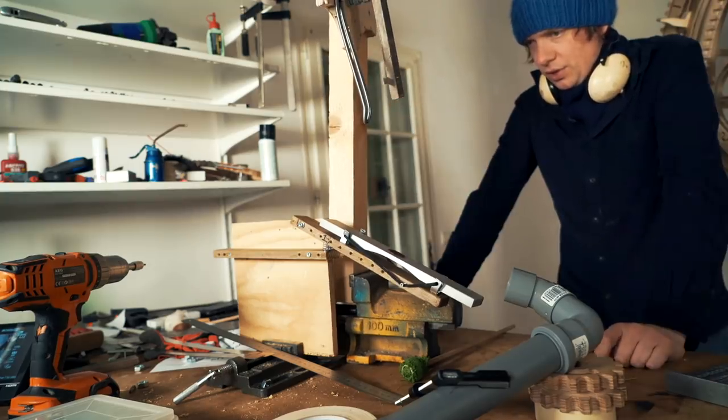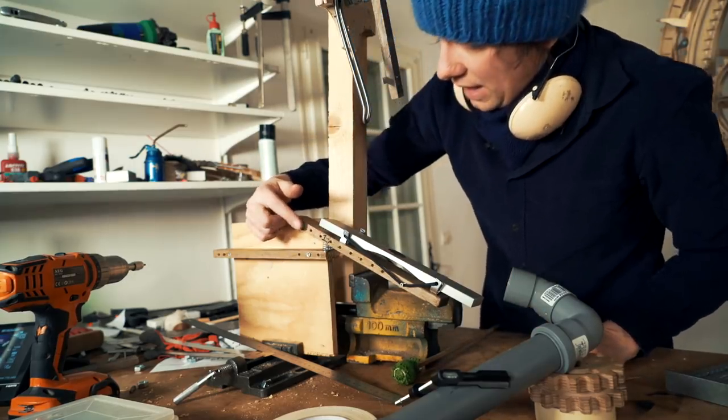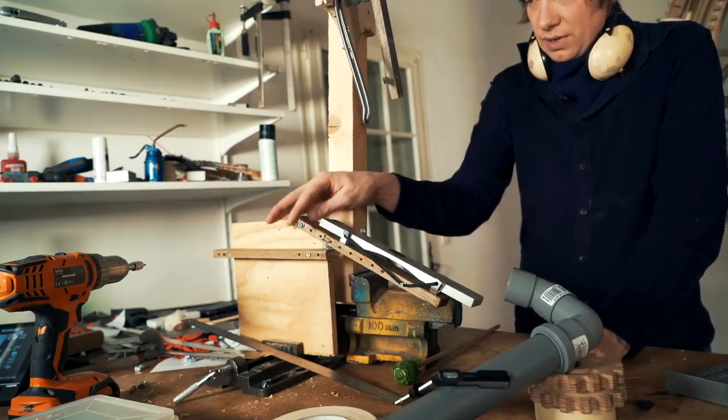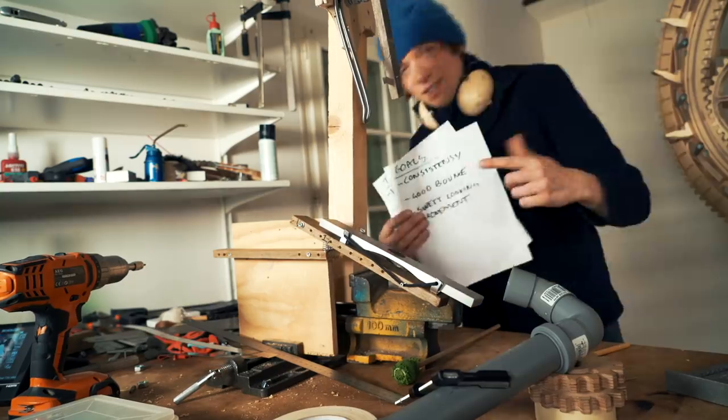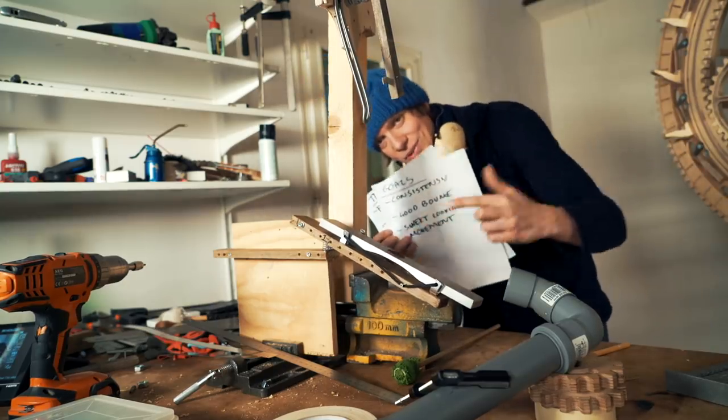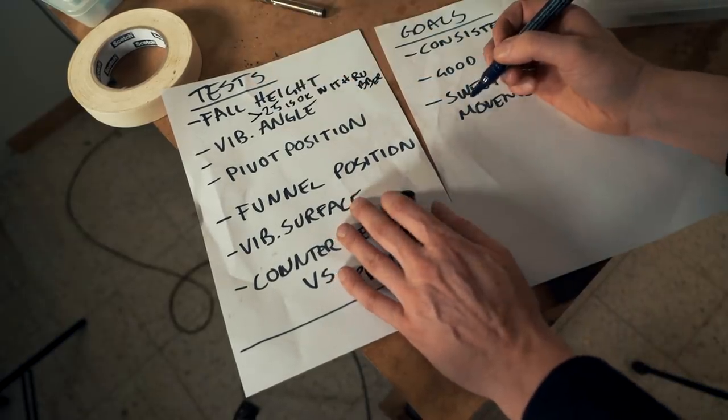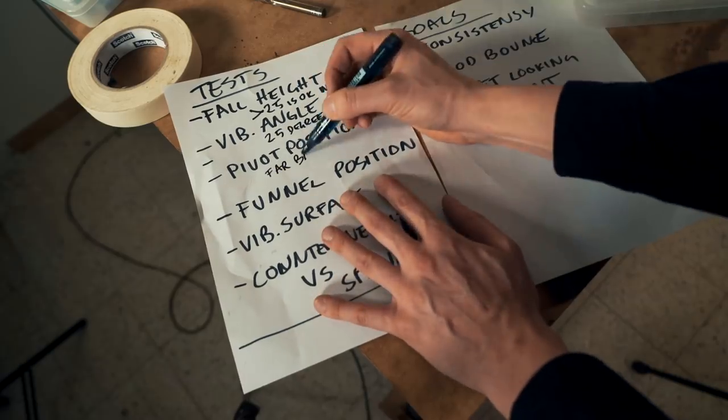The one concern right now is that I want the pivot point to be far back. And I know on the real machine, there are a lot of stuff right behind the vibraphone. So we have to check how far back we can put the pivot point. But yeah, this was a huge success. The rubber pad was great. Fall height higher than 25 is okay with rubber. Angle, I think 25 degrees. Pivot position far back, 170 millimeter.